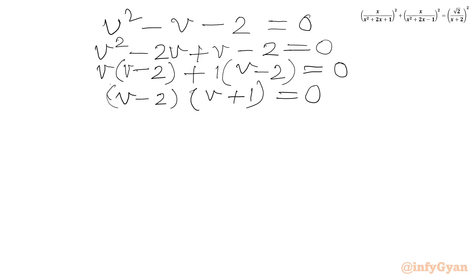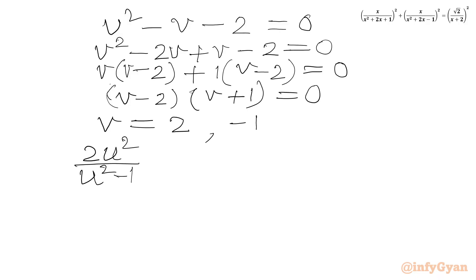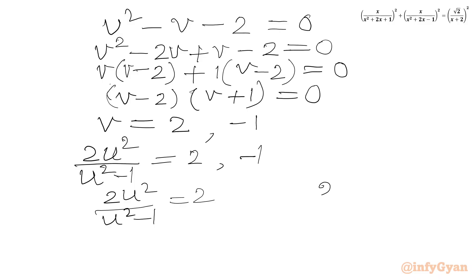Applying the zero product rule, we write either v minus 2 = 0 or v plus 1 = 0. Recalling that v = 2u²/(u²−1), the two cases are: 2u²/(u²−1) equal to 2, and 2u²/(u²−1) equal to minus 1.